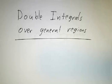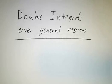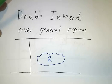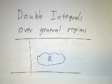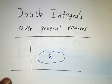In the last learning module, we talked about double integrals over rectangles and how you could write those as iterated integrals. Now we're going to talk about double integrals over more general regions. So let's suppose we've got a region like this, and we want to figure out how to take the integral over it.